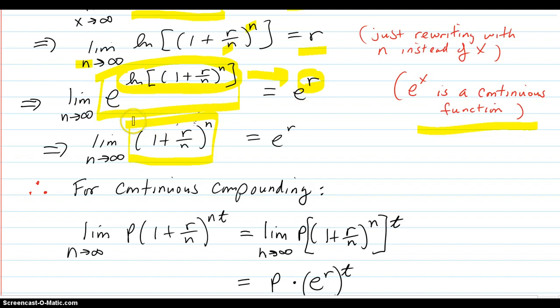So, e to this is e to the r. And this function is equivalent to 1 plus r over N to the N. And that goes to e to the r. Right there.